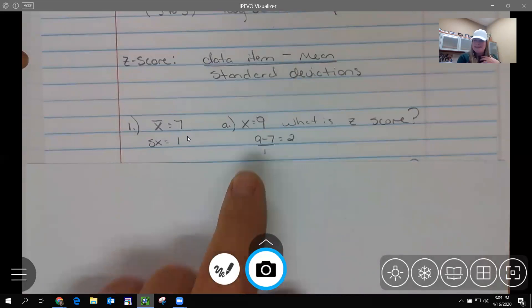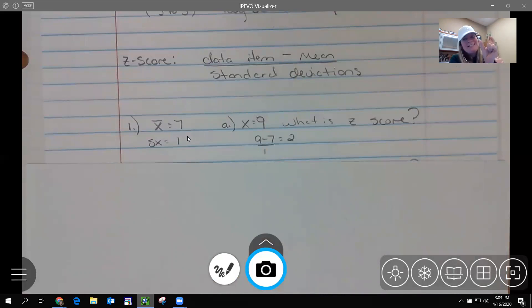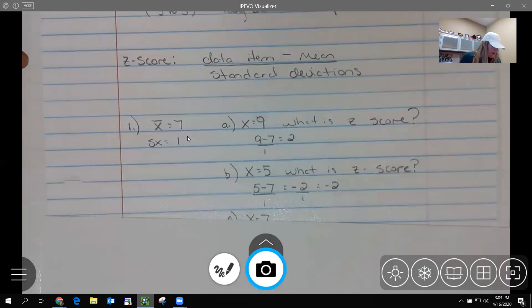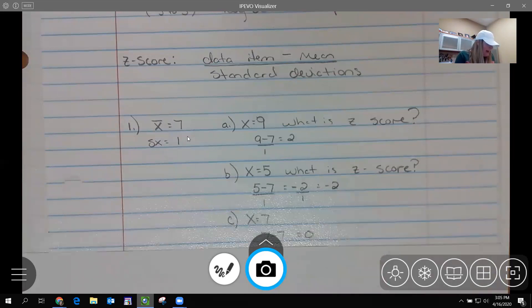For example, let's say our mean is seven and S of X, our sample standard deviation, is one. Then we go over here and say, I'm at a nine. Where am I compared to this data? What is my Z-score? I would take the nine, my data, subtract the seven, the mean, and divide by the standard deviation. Nine minus seven is two. Two divided by one is two.